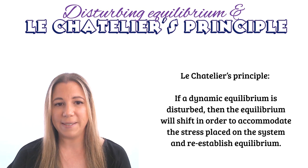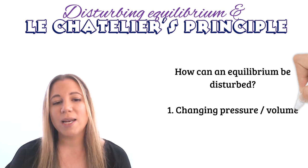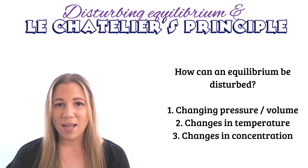There are three ways in which an equilibrium can be disturbed. The first is a change in pressure or volume. The second, a change in temperature. And the third, a change in concentration of the reactants or products.